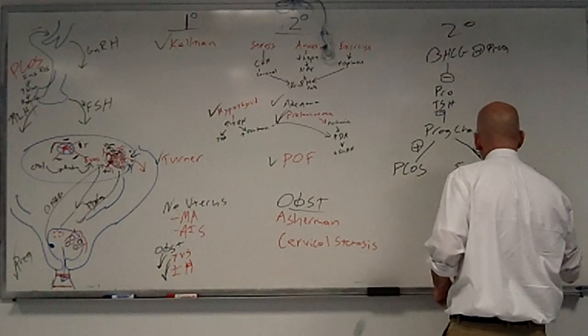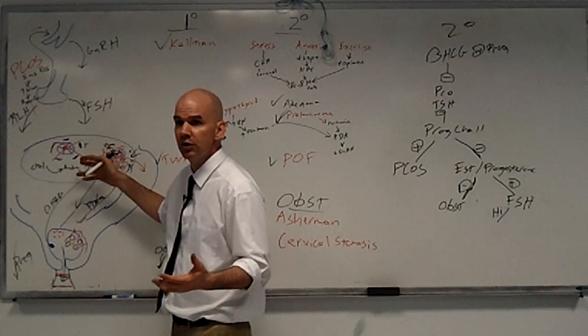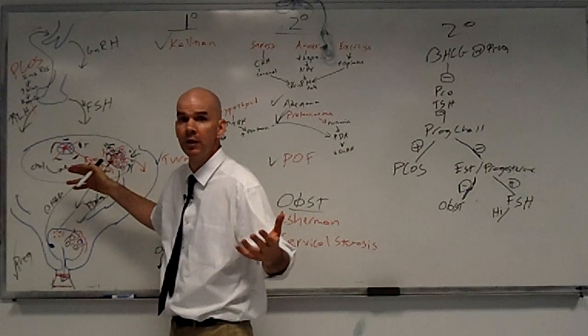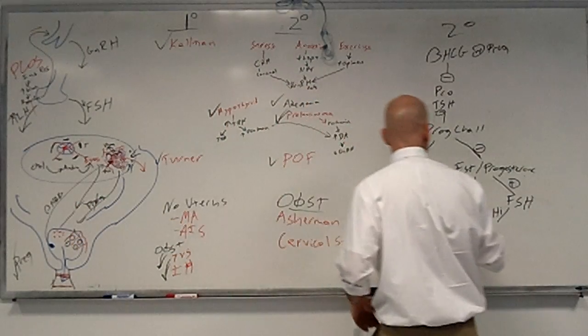We'll check FSH. If the FSH is high, then we know that the problem is at the ovary, because FSH is knocking but nobody's answering, no follicles there to answer. It's going to be premature ovarian failure.